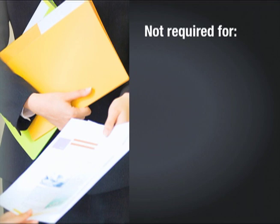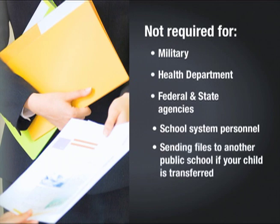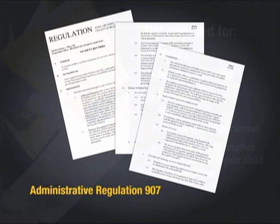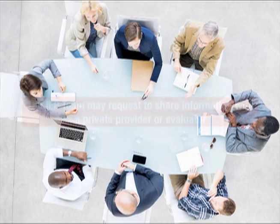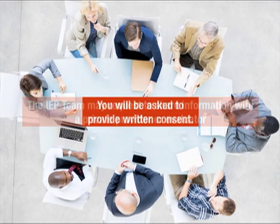Permission to release confidential information about your child may not be required to release information to the military, the health department, or other federal and state agencies. No consent is necessary for school system personnel to review your child's folder. No consent is needed to send the information in your child's file to another public school if your child is transferred. Administrative Regulation 907 has a complete list of agencies and staff who may review your child's confidential information at any time without consent. At IEP team meetings, the team may request to share information with a private provider or evaluator as part of the information gathering process or to share strategies. When this occurs, you will be asked to provide written consent.